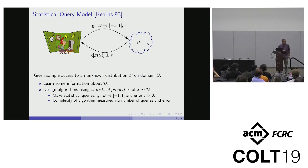We measure the complexity of these algorithms by the number of queries that the algorithm makes and the error parameter tau. In particular, we want the number of queries to be as small as possible, while supporting error which is as large as possible.